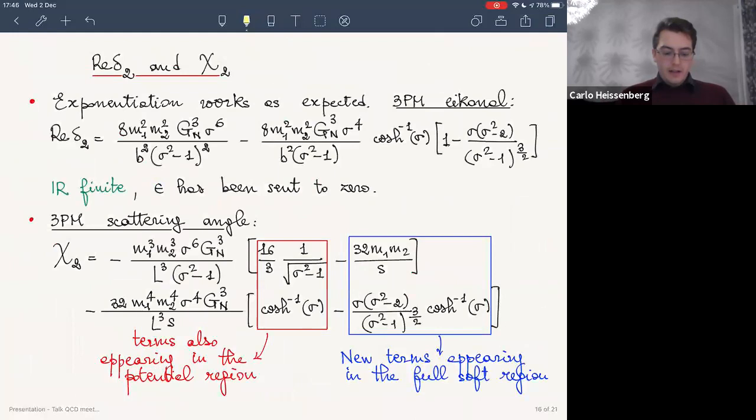Let me move to the results and to the discussion. The first main result is that after working out all these integrals and putting everything back together, the exponentiation works as expected. This is, for instance, the real part of the Eikonal, which, as promised, is in fact IR finite. The 3PM scattering angle has been obtained from the real part, as I described before. We find essentially two sets of terms. One were the terms that had already been found in the paper by Julio, Michele, and Mao, and those appear in the potential region, while these other here in blue are the new ones. So, in order to illustrate them, let me consider separately the high energy and the low energy regime.